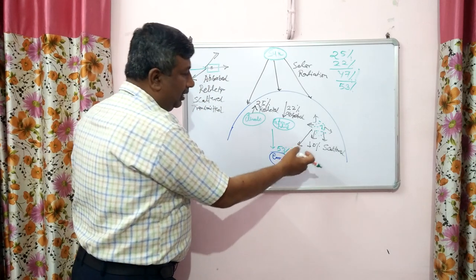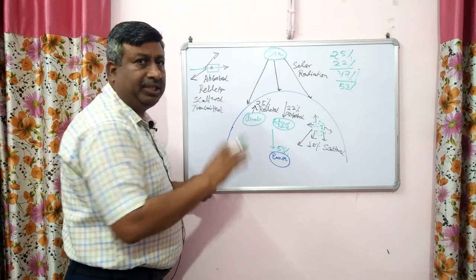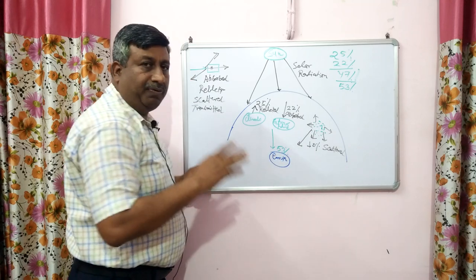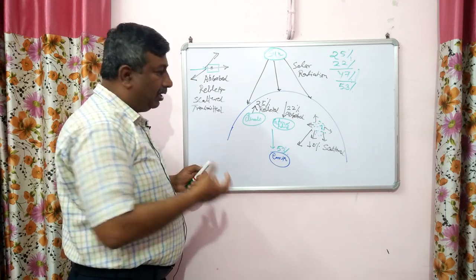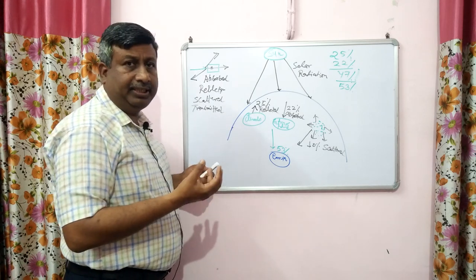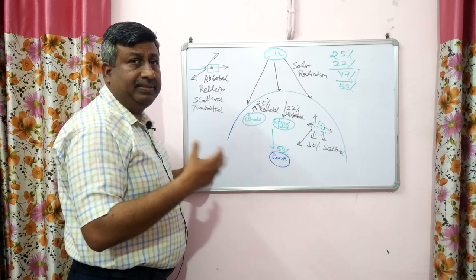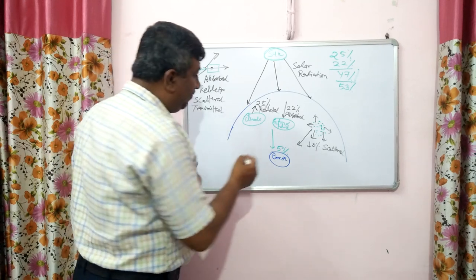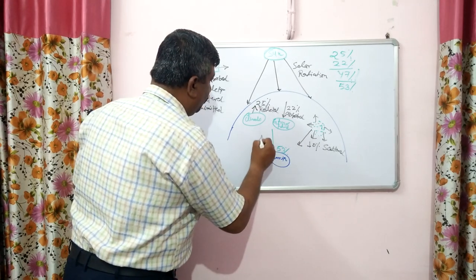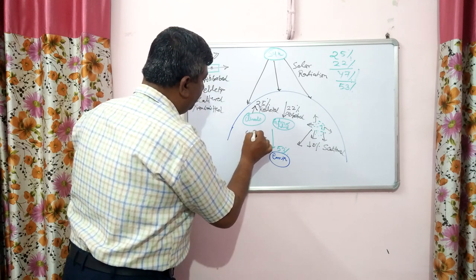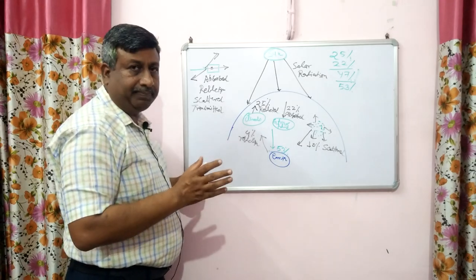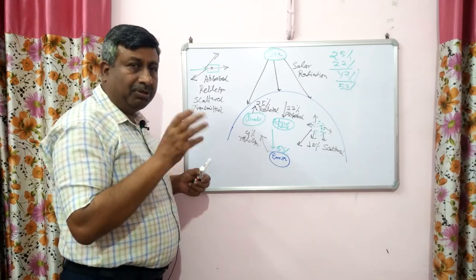Of the 53% reaching earth — removing the 10% scattered — 43% is direct solar radiation. When radiation is received at the earth, snow, vegetation, stone, and soil all reflect some radiation. Reflection by the earth is about 4% on average.